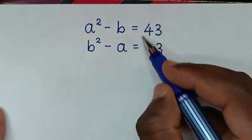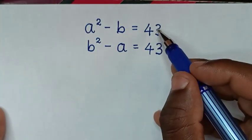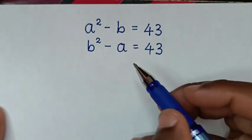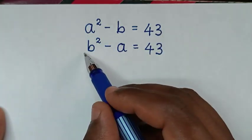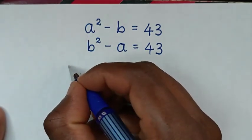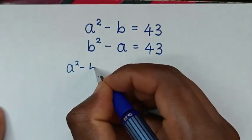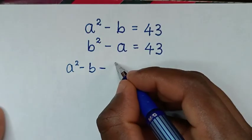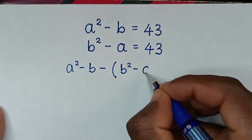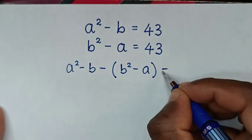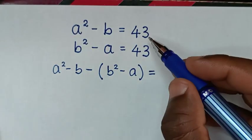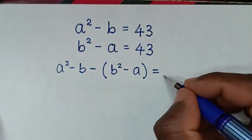Because we have 43 on the right side in both the first and second equations, we will take equation 1 minus equation 2. So from equation 1 on the left side, it is a squared minus b, then minus bracket equation 2 on the left side, which is b squared minus a, bracket, is equal to 43 minus 43, which is 0.